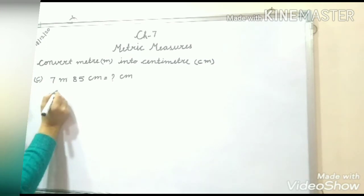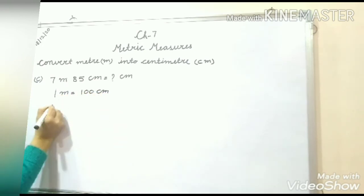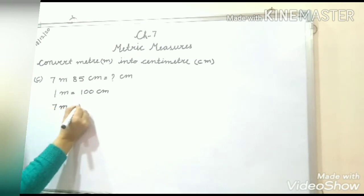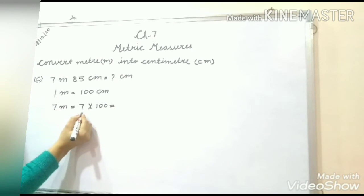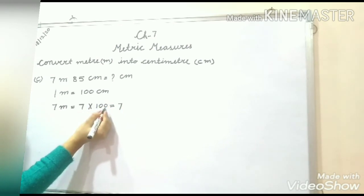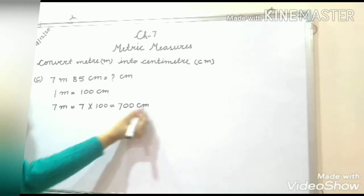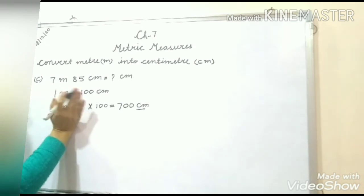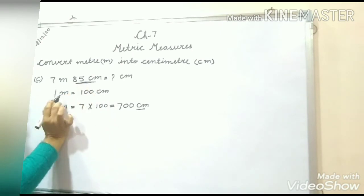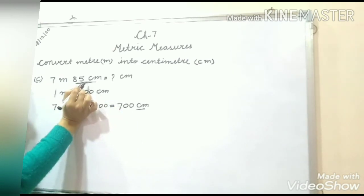First we start by converting 7 meter into centimeter. We write 1 meter equals 100 centimeter. Then 7 meter equals 7 multiplied by 100. We write 7 and put 2 zeros — that gives us 700 centimeter. Always remember to write the unit. So 7 meter has been converted to 700 centimeter.